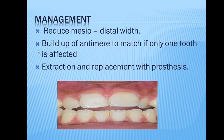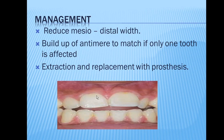When only one tooth is macrodontic, we build up the antimere — the tooth on the opposite side — so both are the same. Another option is extraction of the macrodontic tooth and replacement with a prosthesis.